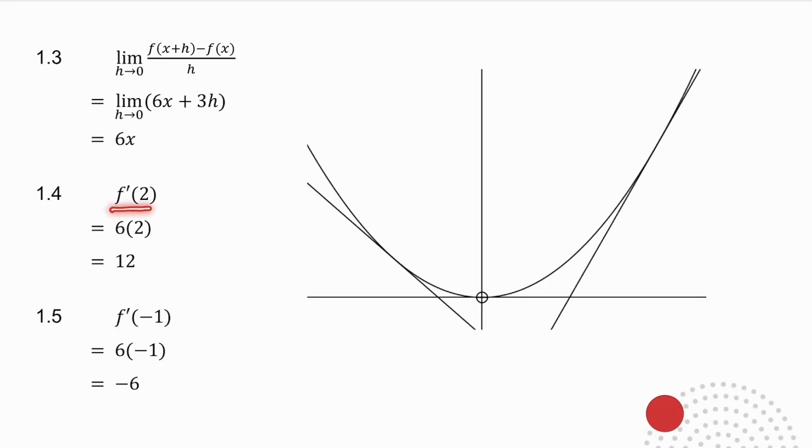So if I ask you for f'(2), that means I want you to find the gradient of this graph at the point x equals 2. So I want you to find the gradient of the tangent line at the point x equals 2. Well, I've got a formula 6x. So all I do is I say 6 times 2, which is 12. So the gradient of the curve, the derivative at the point x equals 2, is 12.